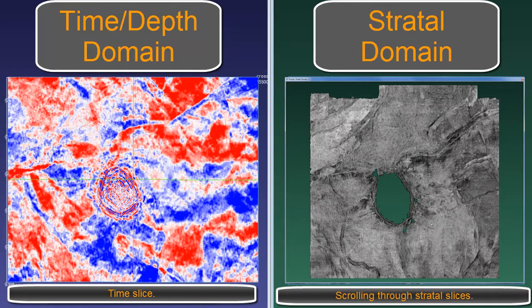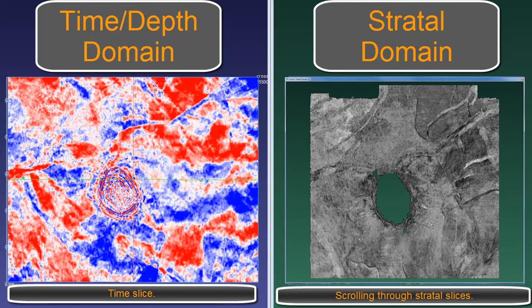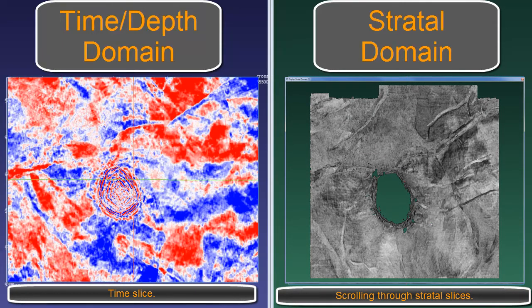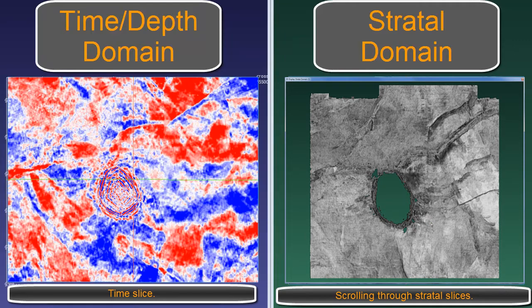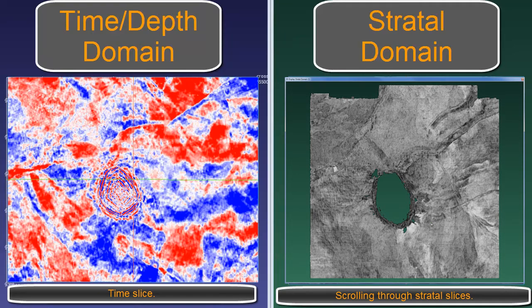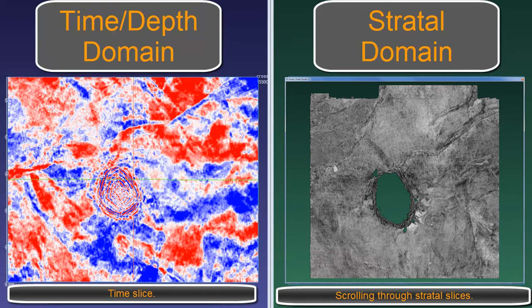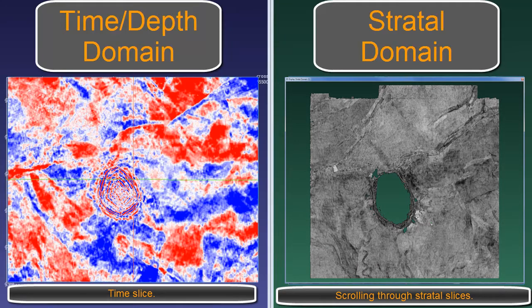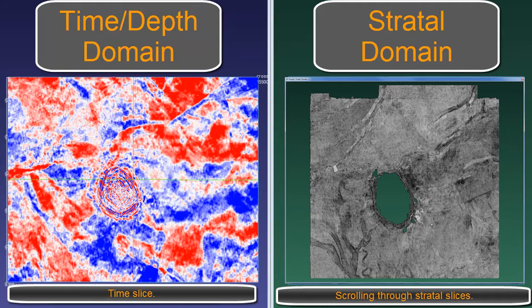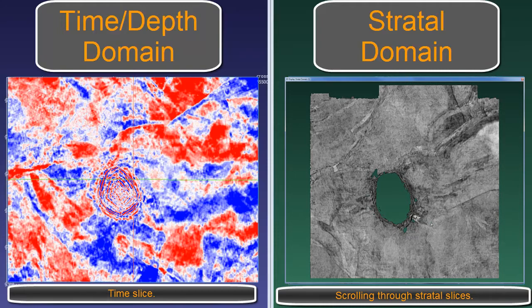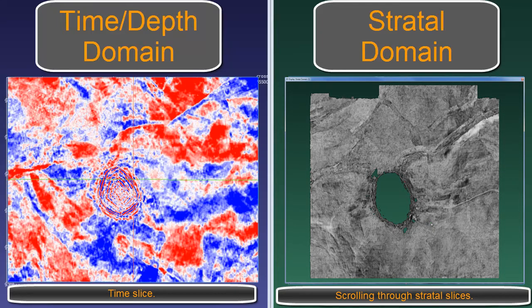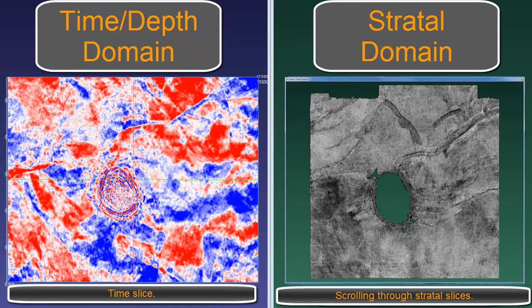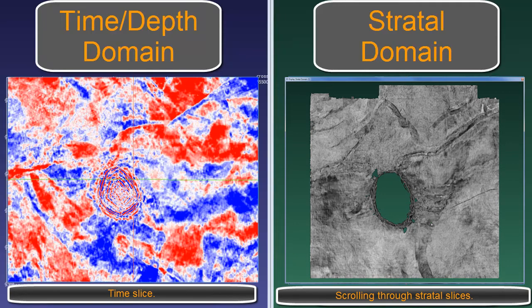Now the interpreter is scrolling through the straddle slices in the straddle volume. PaleoSpark lets interpreters remove structure, look inside complex faulted areas, and see channels and other stratigraphic features as they were originally deposited.